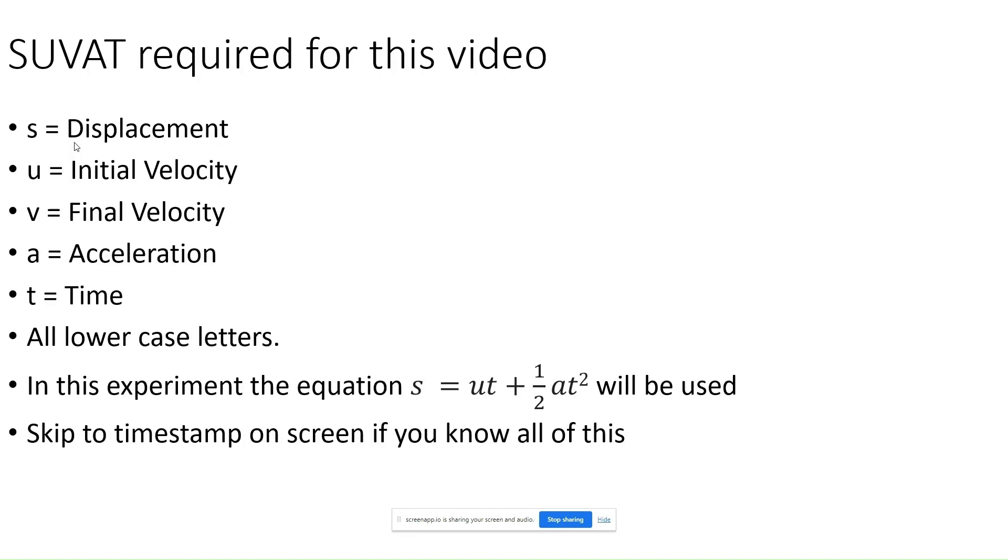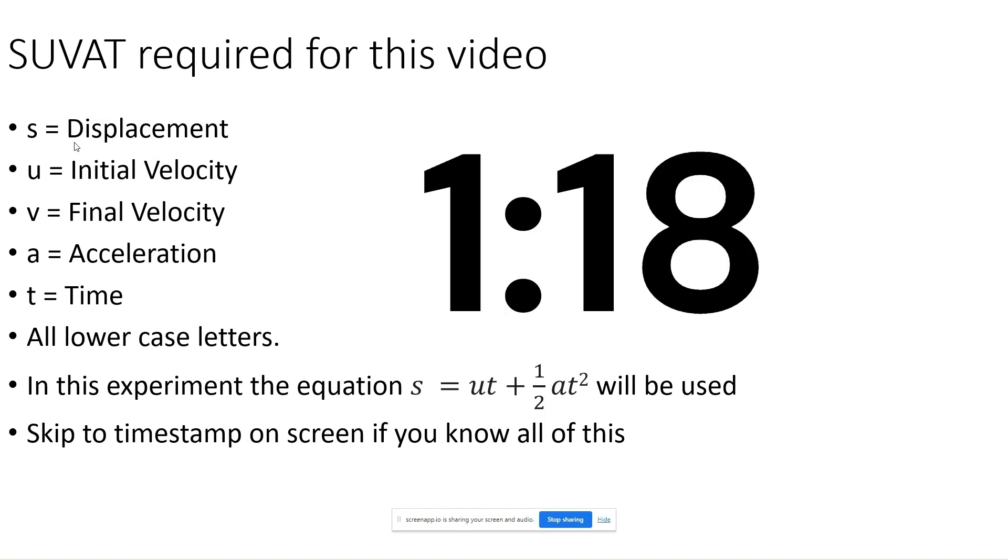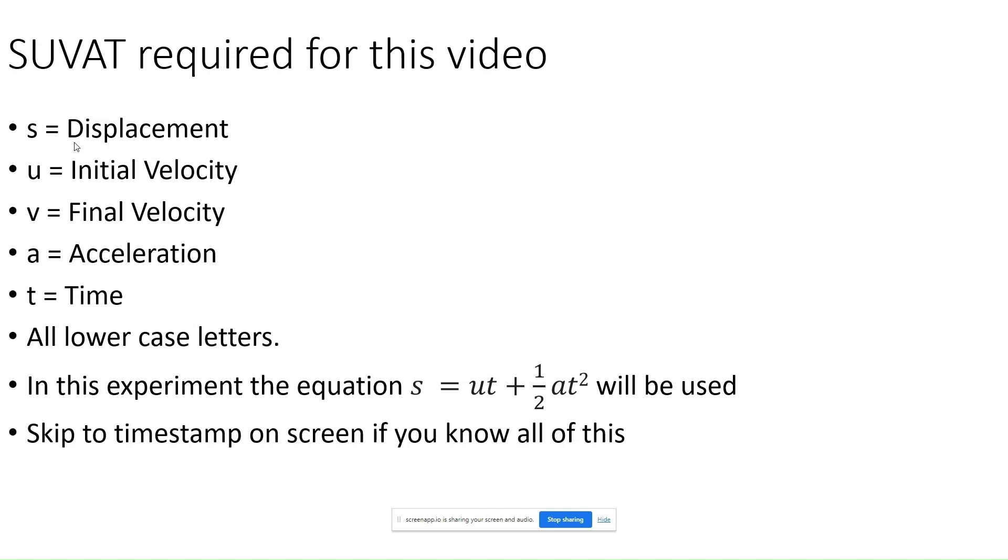And if you know SUVAT, that's great. Skip to the timestamp on the screen. If not, displacement means the shortest distance from the starting point to the ending point possible, which is the distance as the crow flies. Initial velocity means the velocity that the object began with in a given time frame. Final velocity means the velocity that the object ended up with in a given time frame. Acceleration means the rate of change of velocity, and time means the length of progress of existence.